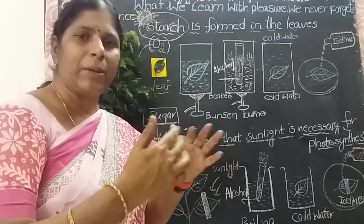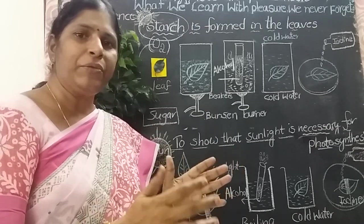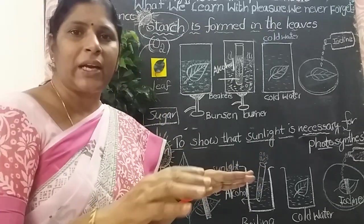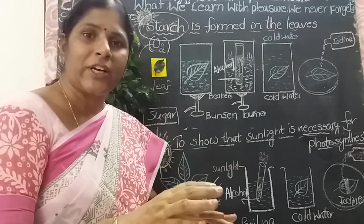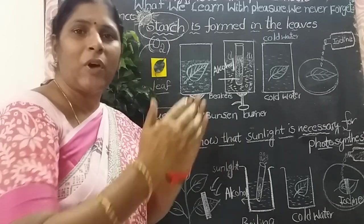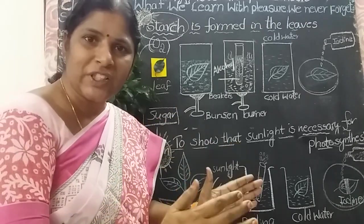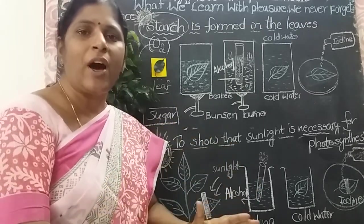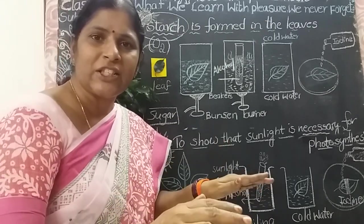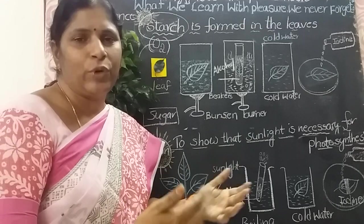Substances coming from plants are rich in starch. Substances coming from animals do not contain starch — don't forget it, children. Animal products do not contain starch; only plant products contain starch. Plants prepare food, and starch is formed by the process of photosynthesis. We proved that starch is present in food items.